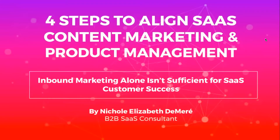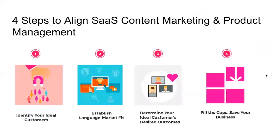I break it down into four steps. The four steps to align SaaS content marketing and product management that I take are: identifying your ideal customer, establishing language market fit — and I say 'establishing' because language market fit is an ongoing process that you should always be working on — determining your ideal customer's desired outcomes, and addressing the success gaps that are in the way of your customers meeting their success milestones to get to their desired outcomes.